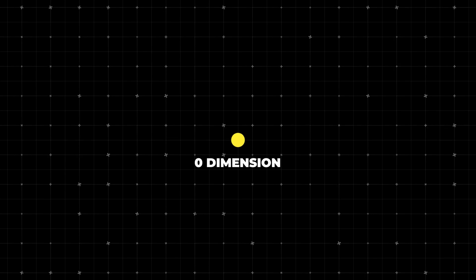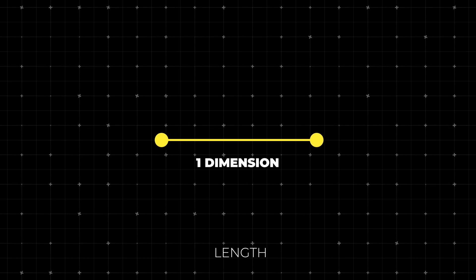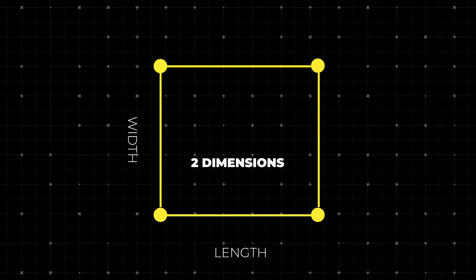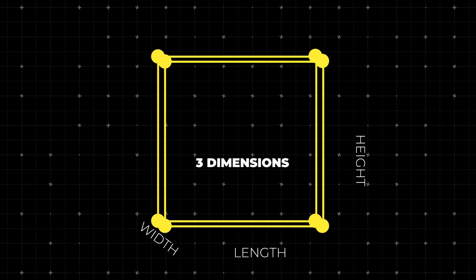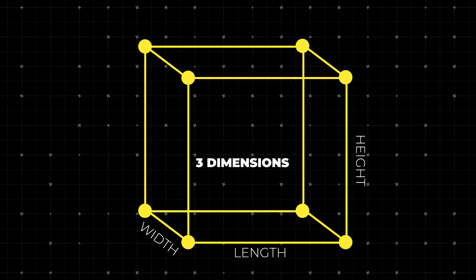Zero dimension is a point in space with no length, width, or height. The first dimension has length, like this straight line between two points. The second dimension contains length and width, a flat plane like a sheet of paper. In the third dimension — the dimension we're a part of — has length, width, and height. Here we are in the voluminous space we inhabit.